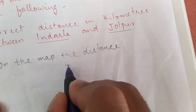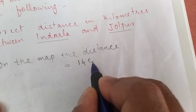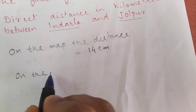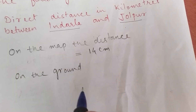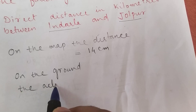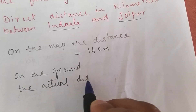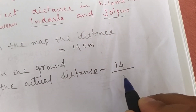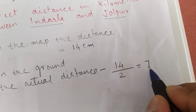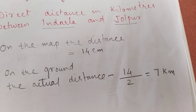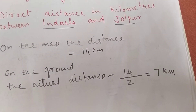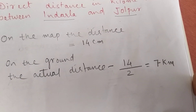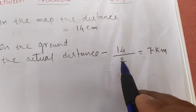On the map the distance is 14 centimeters. On the ground, the actual distance will be 14 divided by 2, which equals 7 kilometers. On the toposheet, distances are given in centimeters, and when converting to kilometers we divide by 2.